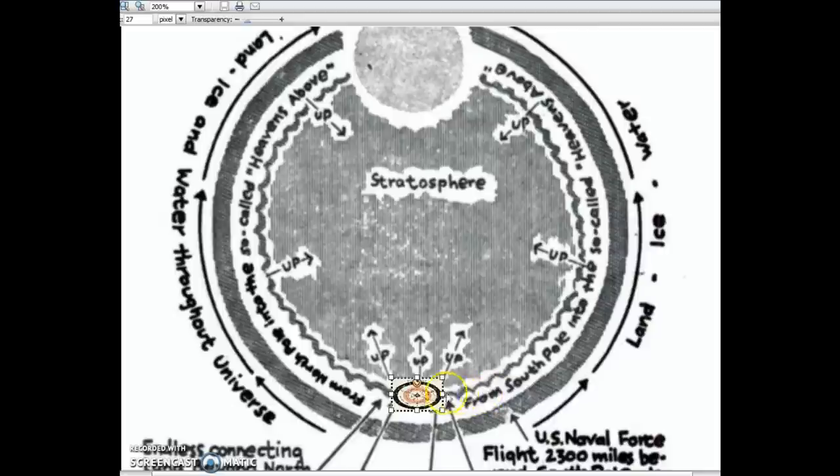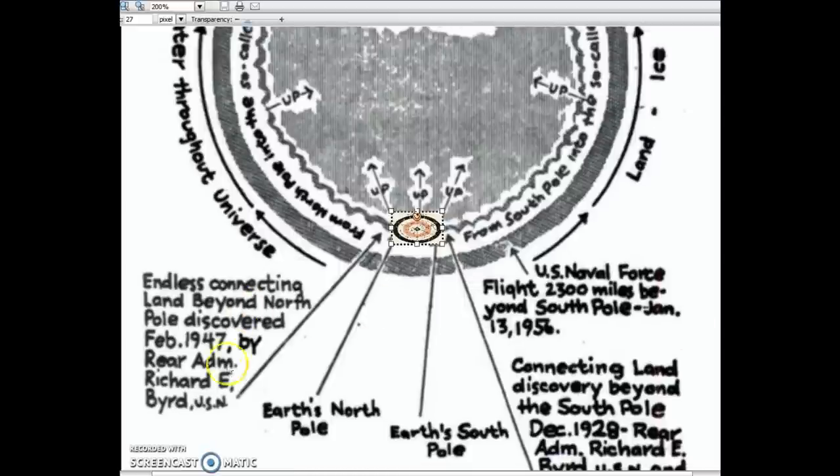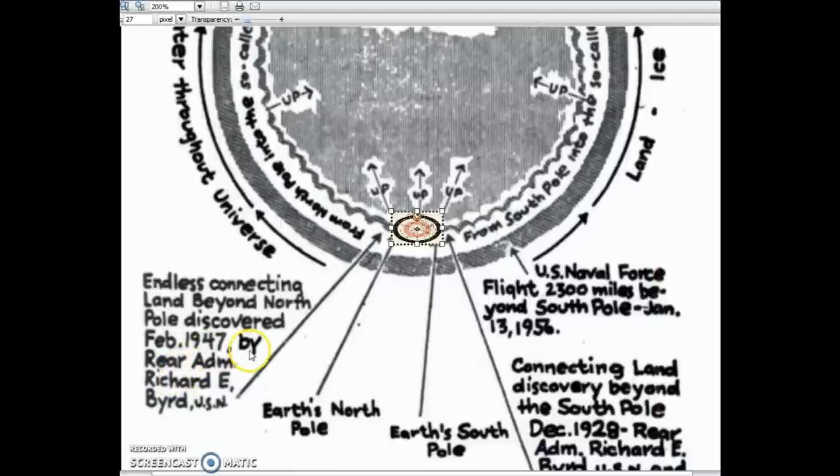So apparently you could go either way. It says here, Byrd flew, he said there's endless connecting land beyond the north pole, discovered in 47 by Admiral Byrd. It says here, U.S. naval force flight, 2,300 miles beyond the south pole in 56. And look where the arrow's pointing here.